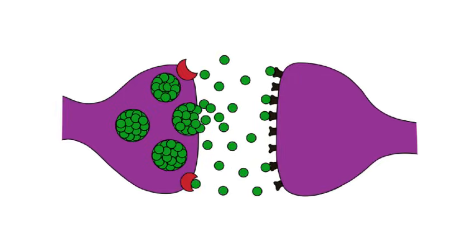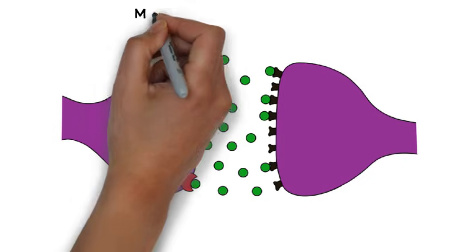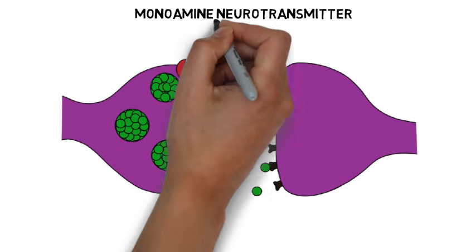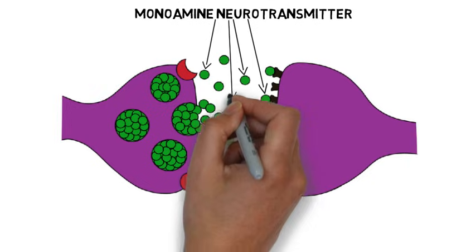Although all the details of how cocaine produces its effects are not known, it is thought that the main mechanism by which cocaine acts on the brain is through the inhibition of the reuptake of neurotransmitters called monoamines. Monoamines are a group of neurotransmitters that includes dopamine, norepinephrine, and serotonin.